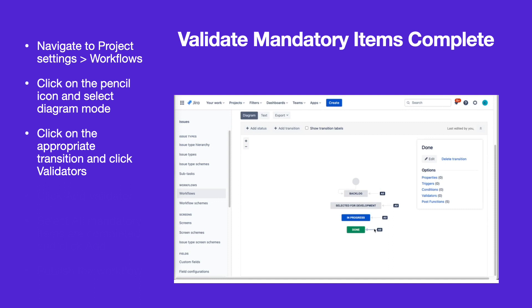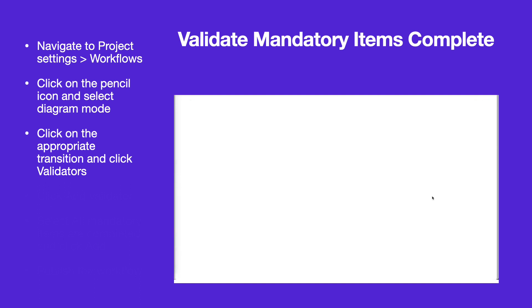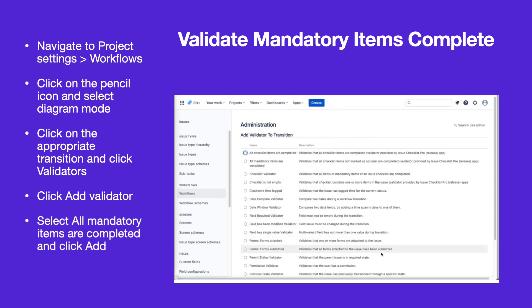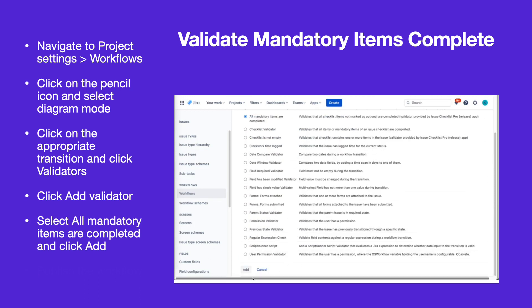Click on the appropriate transition. Click Validators, then click Add Validator. Select All Mandatory Items Are Completed and click Add.